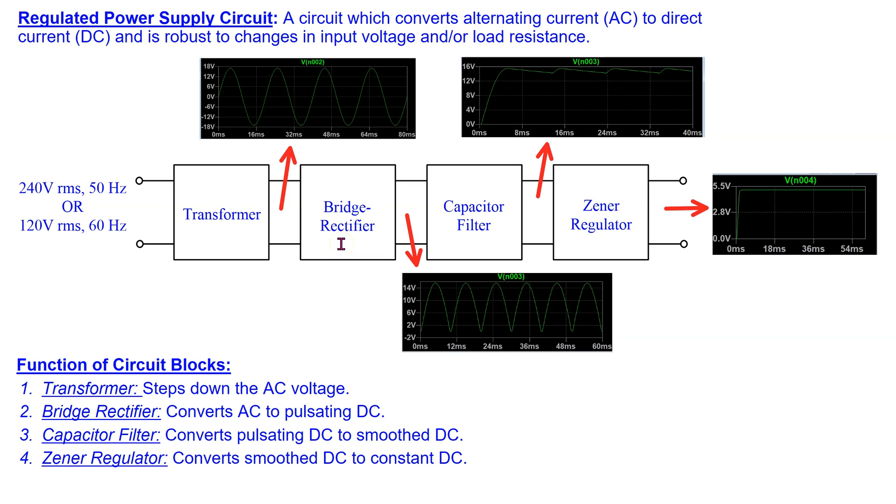The bridge rectifier converts AC to pulsating DC. The capacitor filter converts pulsating DC to smooth DC with a ripple. Finally, the zener regulator converts smooth DC to constant DC at the output.